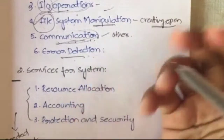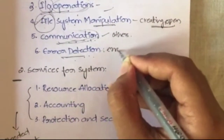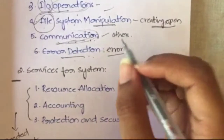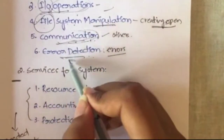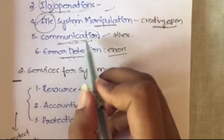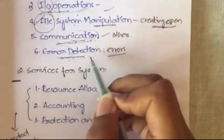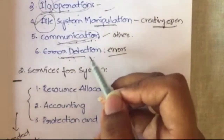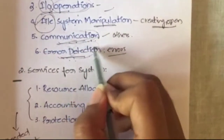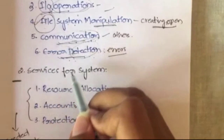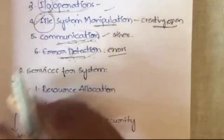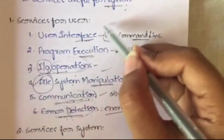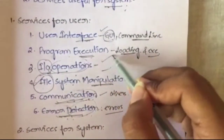The next service is error detection. Your programs may have errors — syntactical or logical. The operating system can detect those errors. If the OS did not detect errors and you blindly executed the program, you would get mistakes. So the operating system detects the error and also corrects it.